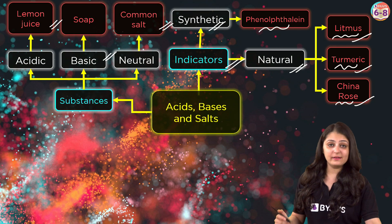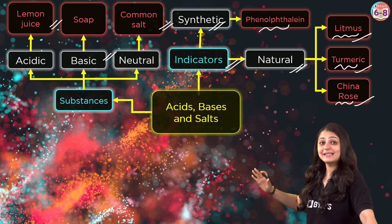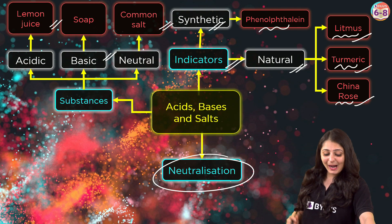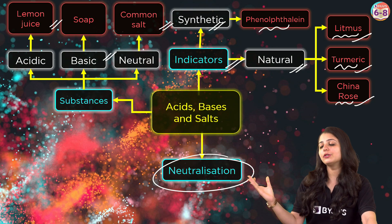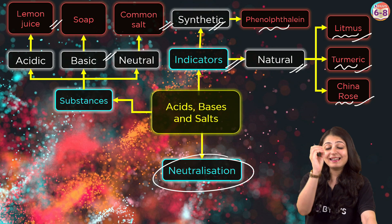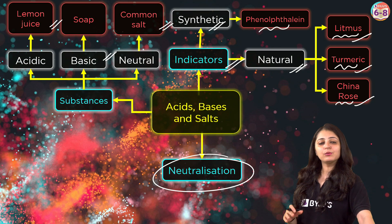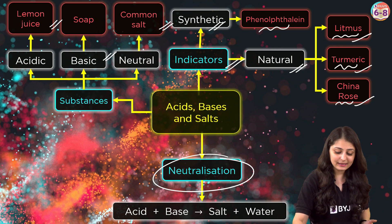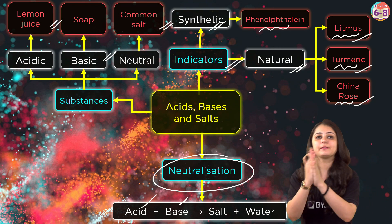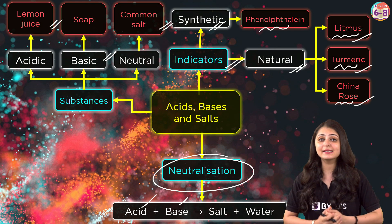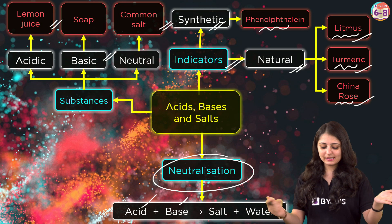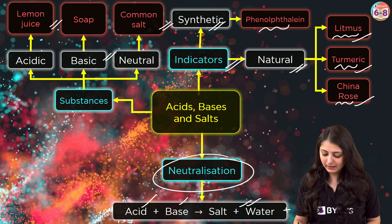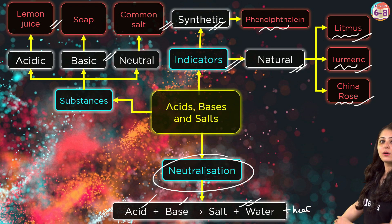Now, what happens when we mix an acid and a base together? There is a beautiful word for that — neutralization. Neutralization is a chemical reaction in which an acidic and a basic substance are mixed to neutralize each other's effect. Salt and water are produced, and heat is also released in the process.